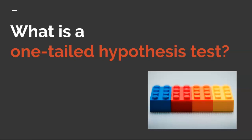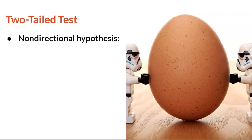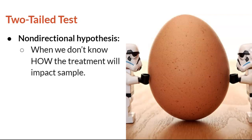Recall that hypothesis is just a fancy word for prediction. There are actually two types of hypotheses. Which one you choose will determine whether you conduct a one-tailed or a two-tailed hypothesis test. A two-tailed test is the first hypothesis that you learned how to do. This test uses a non-directional hypothesis. The prefix non- means not or unknown. In other words, we do not know in what direction the sample will go. The treatment given to the sample may increase or decrease the effect. We use a non-directional hypothesis when we do not know how the treatment will impact the sample. The two-tailed test is the most common test used, especially with new research.